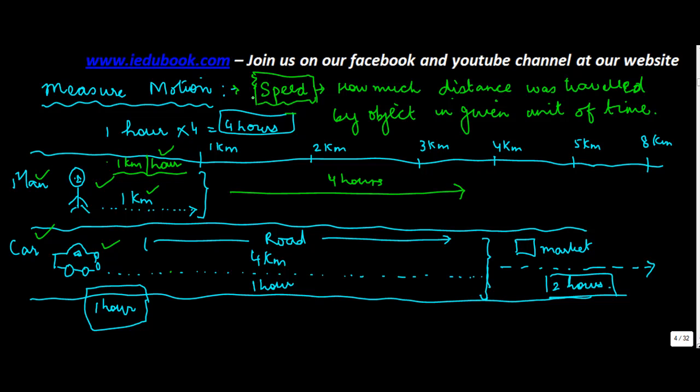And then this also gives a comparison of the relative movement of motion. So here it is basically one kilometer per hour. Here it was four kilometers in one hour, so it is four kilometers per hour.